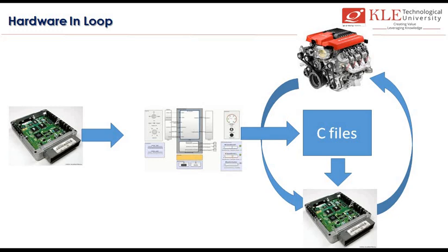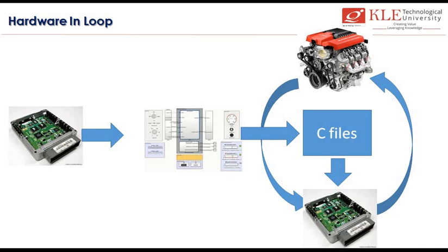Next we have HIL, Hardware In-Loop. Here, I have a prototype of the plant model — it may be an actual plant model or a prototype. I model the controller behavior in the simulation software, then generate a C file, convert it to a binary file, and dump it to the target hardware. The hex or binary file will be running on the real hardware as the controller. I connect them together in a loop — that becomes my HIL, Hardware In-Loop. MIL, SIL, PIL, and HIL are widely used in the automotive industry and are very important questions in an interview.